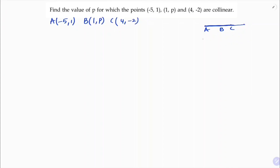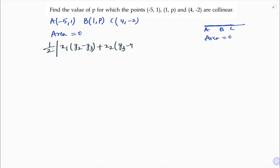Since these points lie on the same straight line, their area will be zero. Area equals zero because the area of a straight line is zero. So using the area formula: area of a triangle equals half mod of x1(y2 minus y3) plus x2(y3 minus y1) plus x3(y1 minus y2).